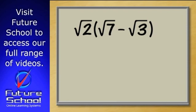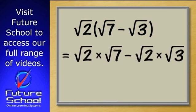Yes, we multiply each term in the brackets by the square root of 2. That gives root 2 times root 7 minus root 2 times root 3.